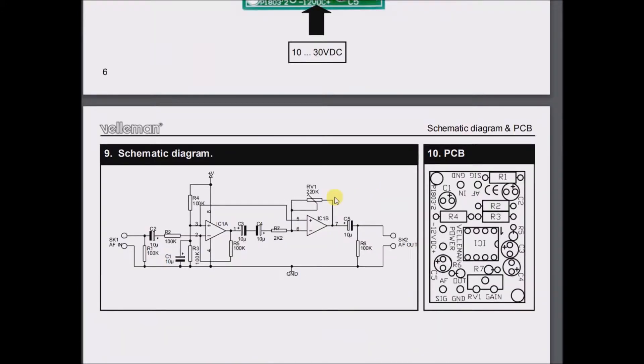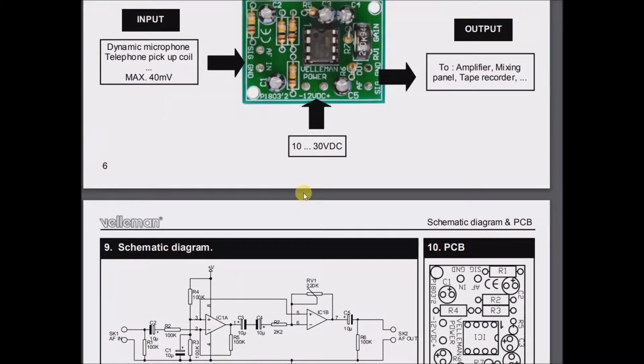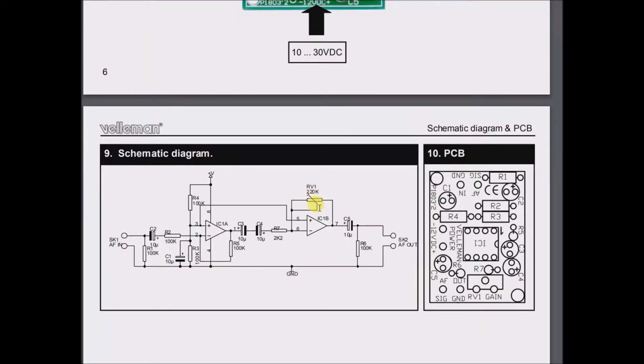And it's important to note that this 220K, 250K trimmer is actually hooked up to the op-amp IC. And this is one of the comparators inside of the op-amp.